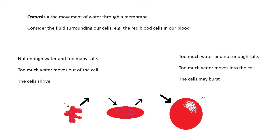Hopefully you remember from GCSE: osmosis. Osmosis is the movement of water through a membrane. It's a bit like the diffusion of water. In diffusion, you have stuff going from a high concentration to a low concentration. In osmosis, you have water going from a place where there's lots of water through a membrane to a place where there's less water. That's osmosis.